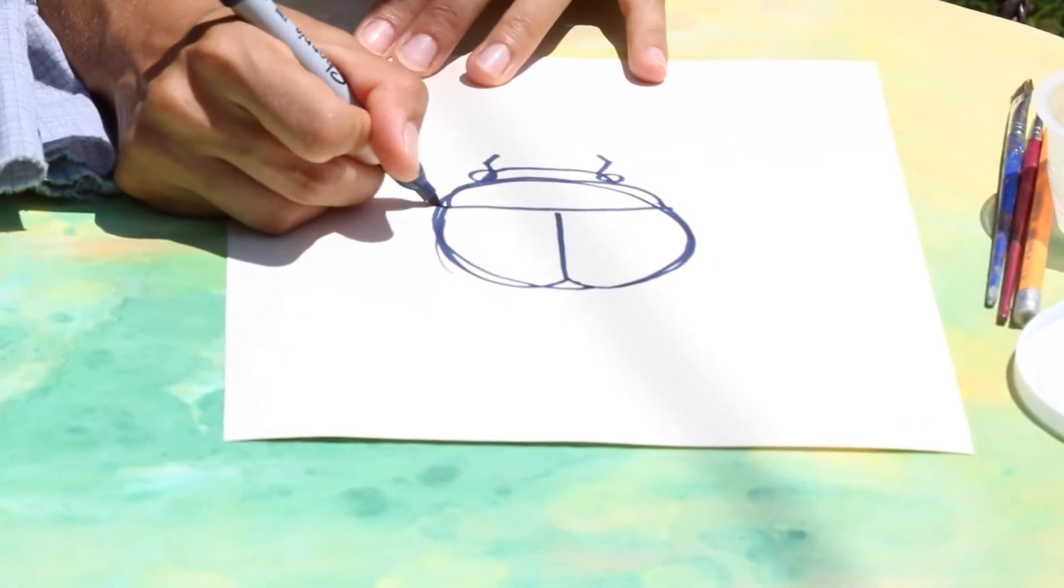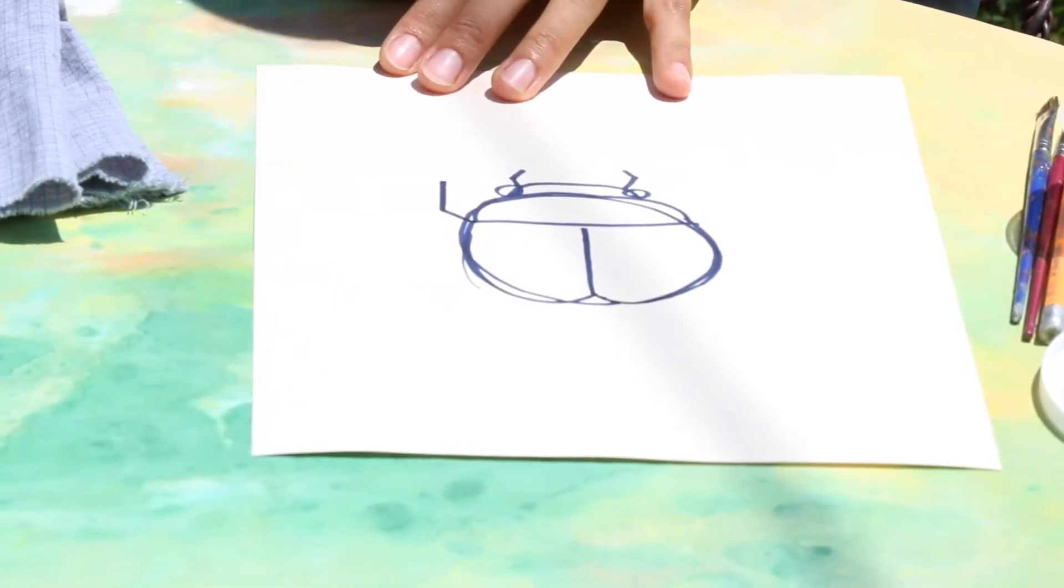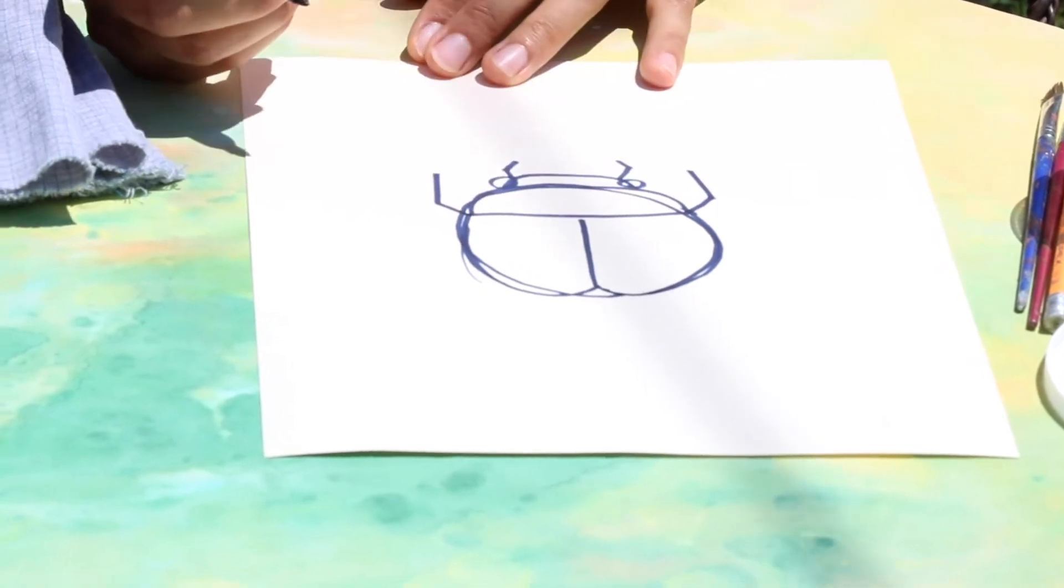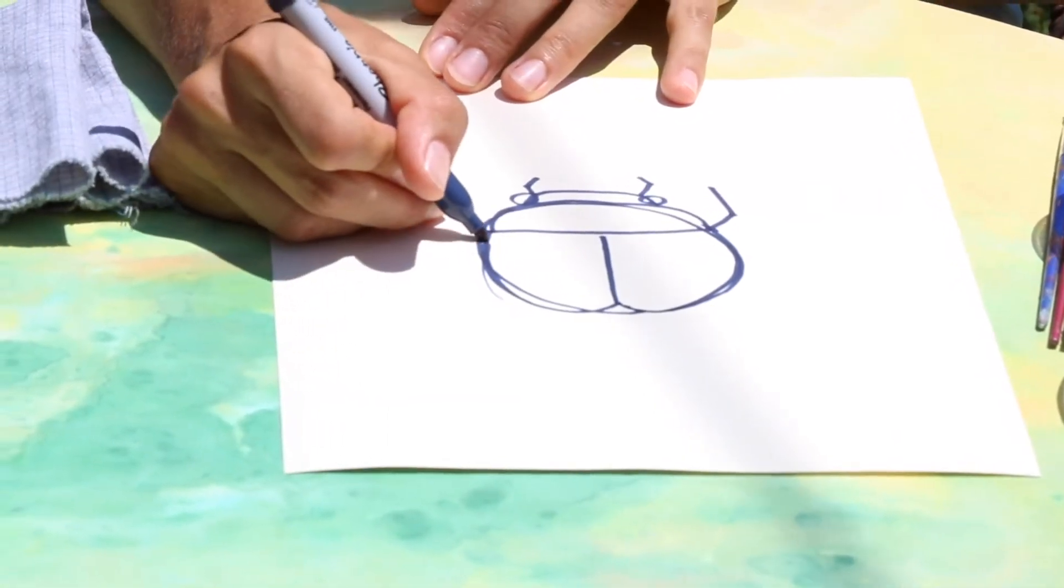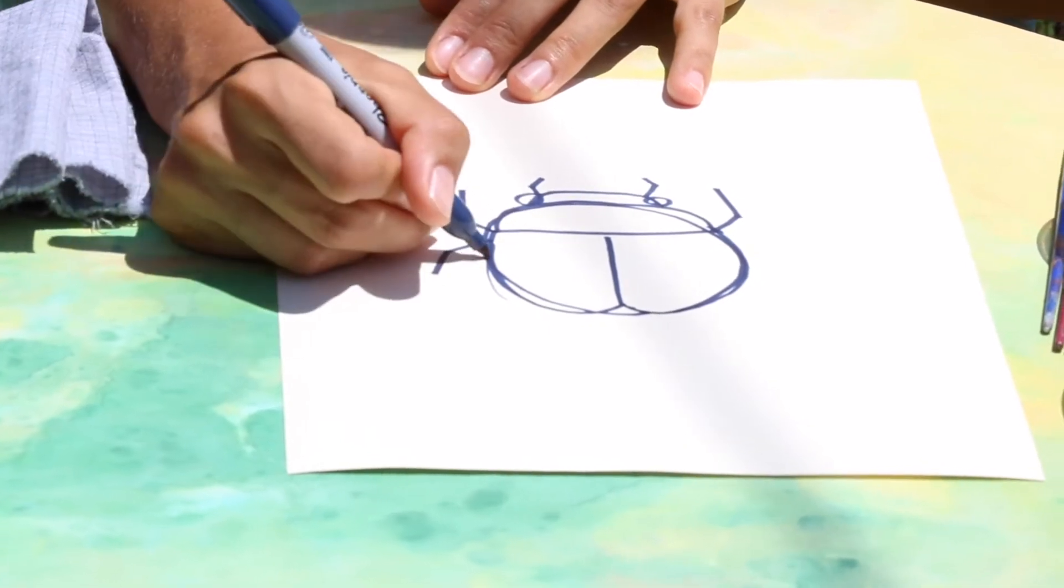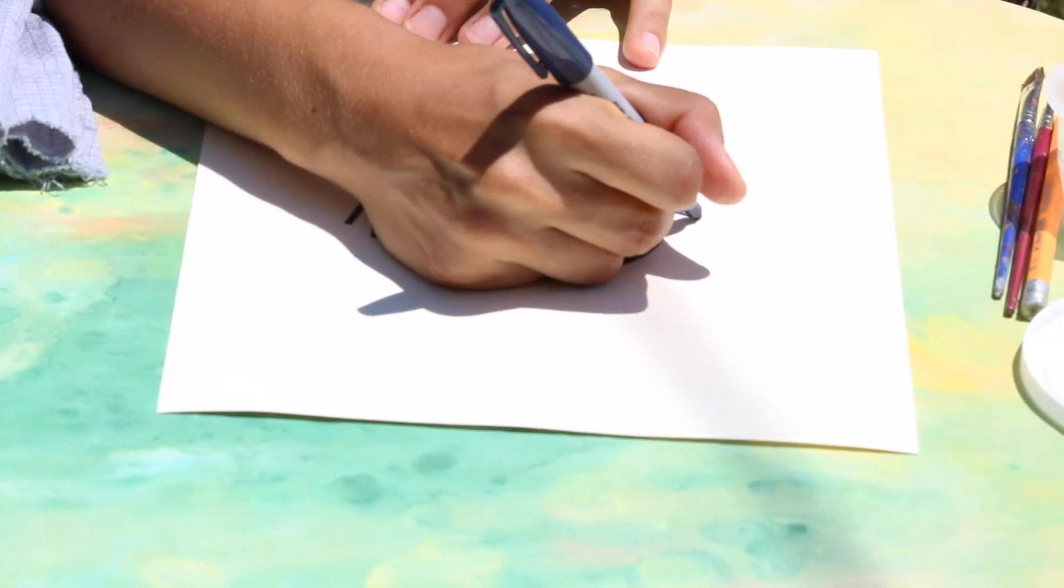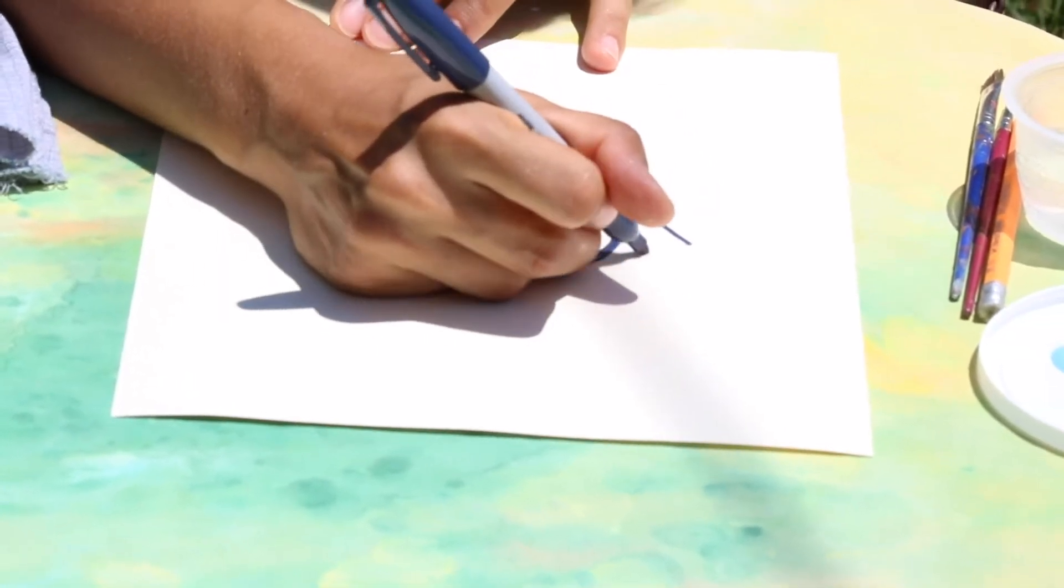So the top ones go up and then bent and up more, up bent and up more. And then the bottom ones face down and then bend down, and then bend down, bend down bend.